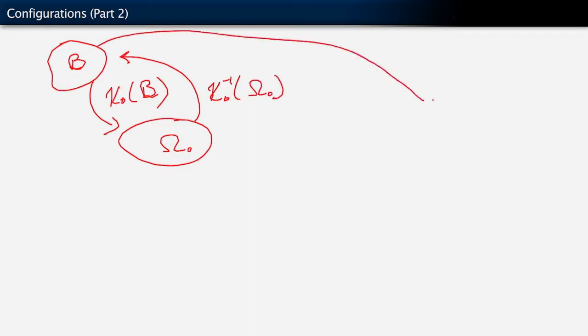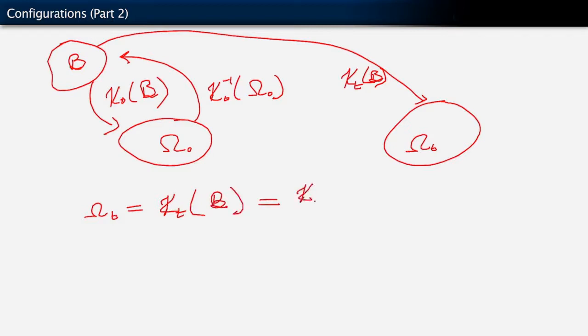Now, when B is mapped by kappa sub t to some later configuration omega sub t, we can actually go one step further. Instead of saying that kappa sub t is parametrized by B, it's a mapping of B, we can also include this in here. So we say that omega sub t is kappa sub t of B. But that is kappa sub t of kappa nought inverse of omega nought.